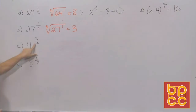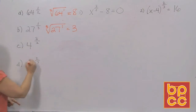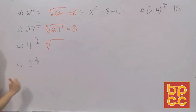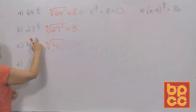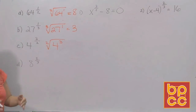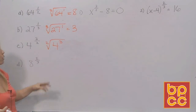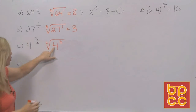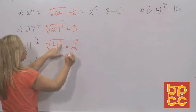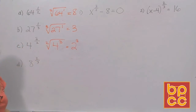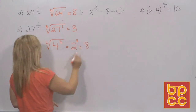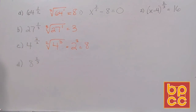For 4 to the three-halves, the denominator is 2, so it's a square root. The exponent is 3. It's always easier to do the root first. The square root of 4 is 2, and then you cube it: 2 cubed is 2 times 2 times 2, which is 8.